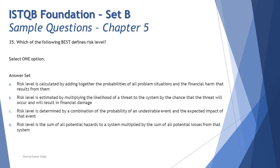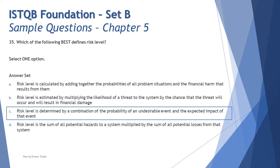Let's review Option D: risk level is the sum of all potential hazards to a system multiplied by the sum of all potential losses from that system. Again, it's not about addition or multiplication — it's just the combination of two parameters put together to determine the level of risk. So the right answer is C: risk level is determined by the combination of the probability of an undesirable event and the expected impact of that event.